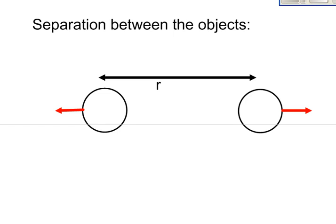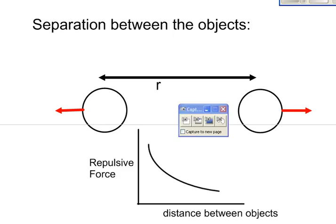If we were to graph it, we would end up with a graph that looks a little something like this. As you can see from the graph, as the distance increases, the repulsive force decreases. The closer the objects are, the more force they feel between them. But this time, it's not a linear relationship. It's an inverse relationship between the distance between the objects and the resulting repulsive force.